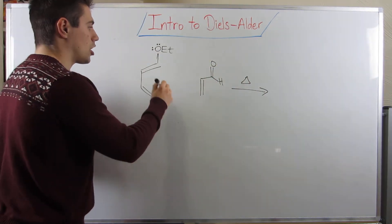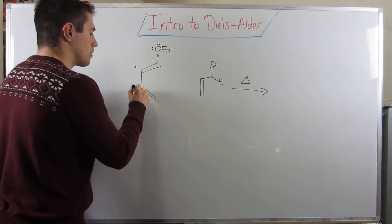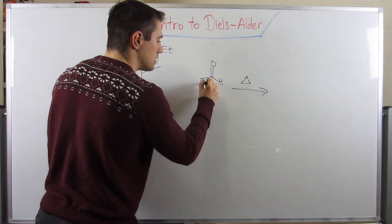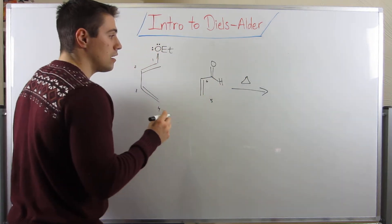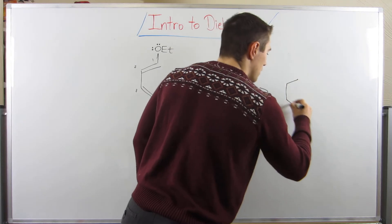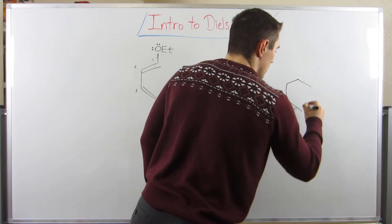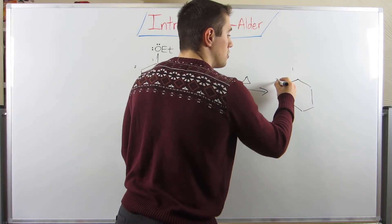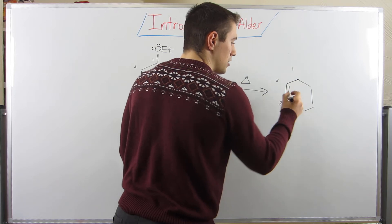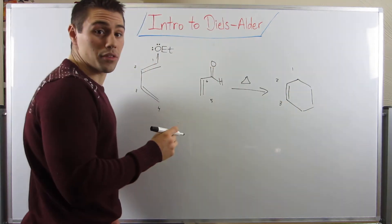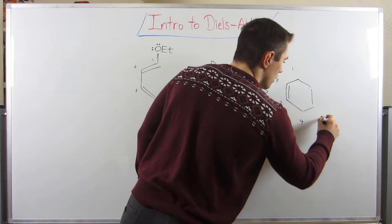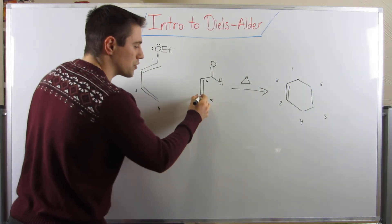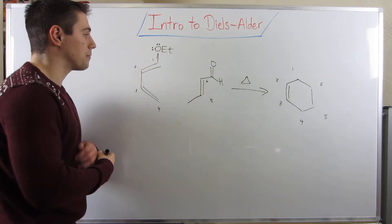Let's number our carbons: one, two, three, four, five, and six. I'll draw my generic ring, number the ring carbons: one, two, three - with the double bond between two and three - four, five, and six. I'm going to put a methyl group at position five.